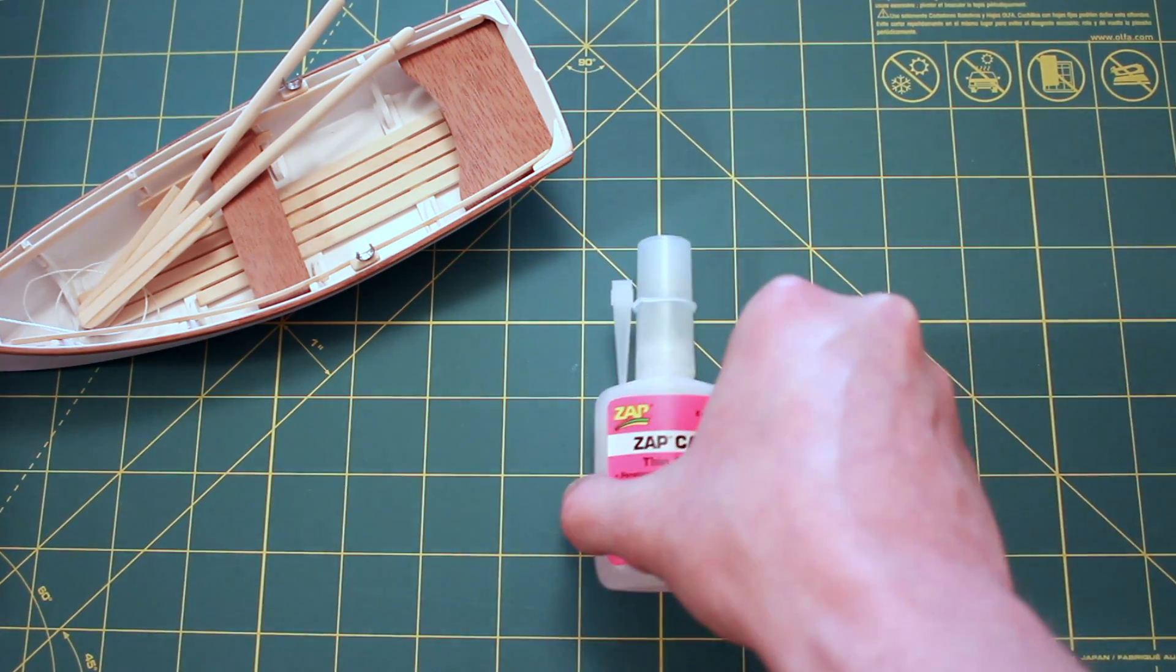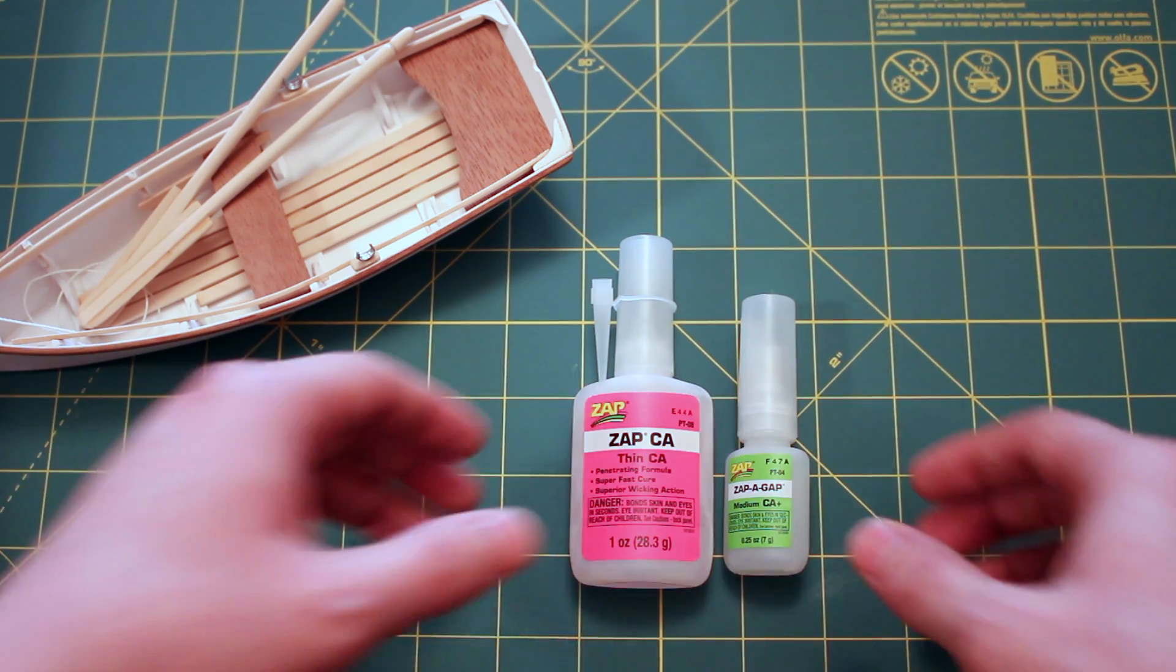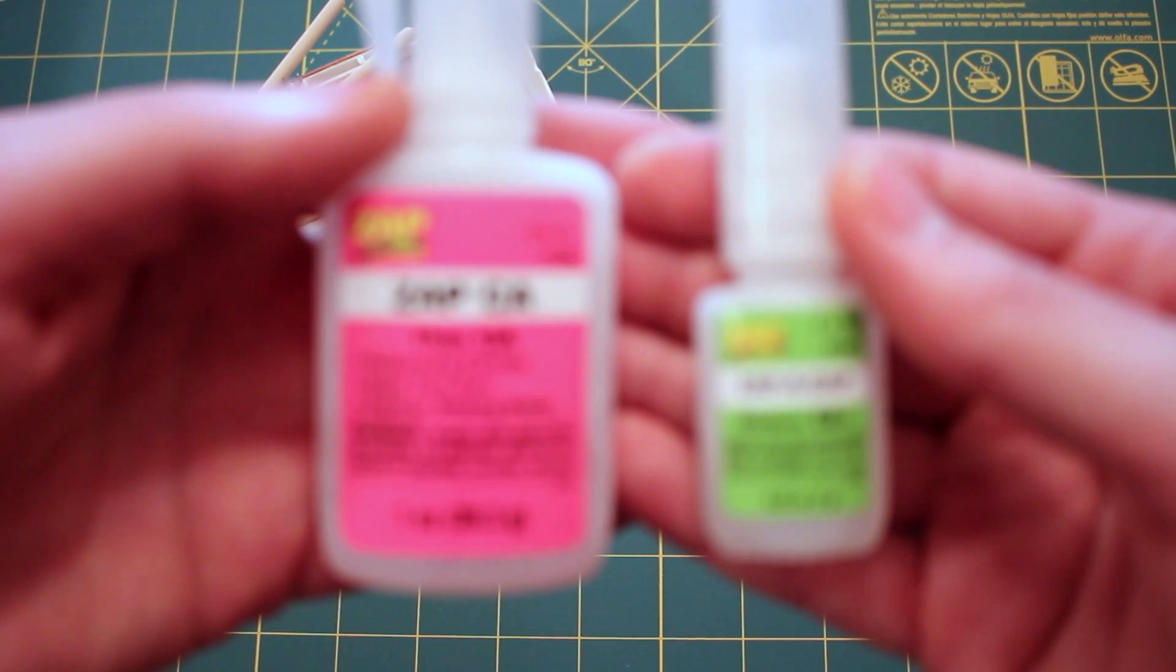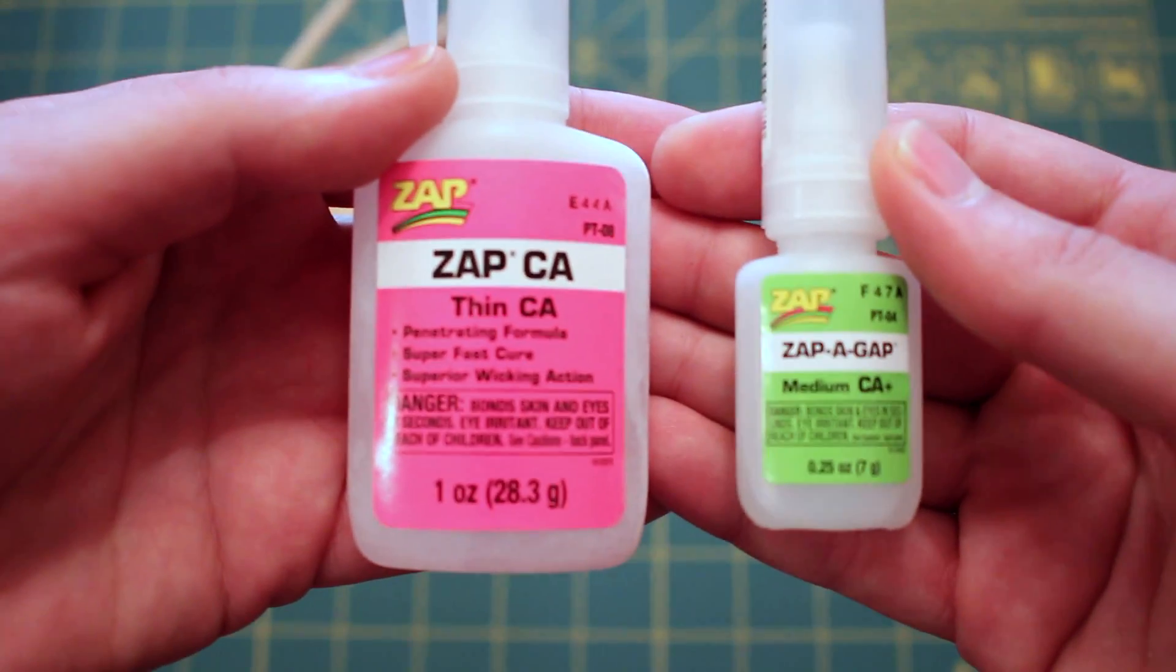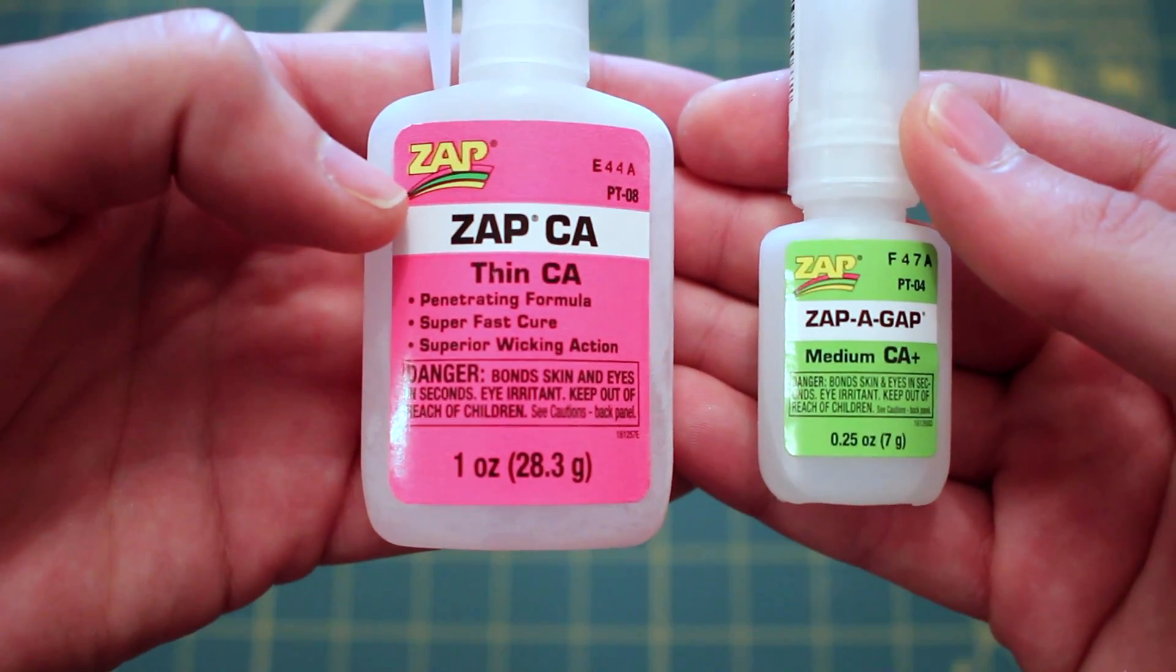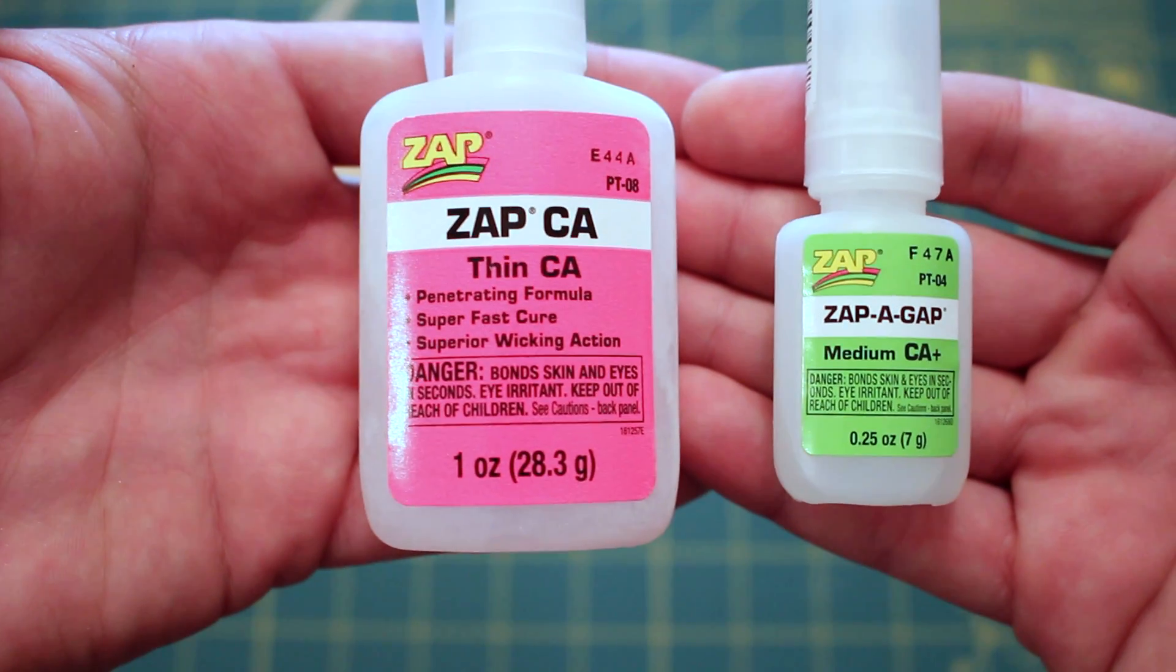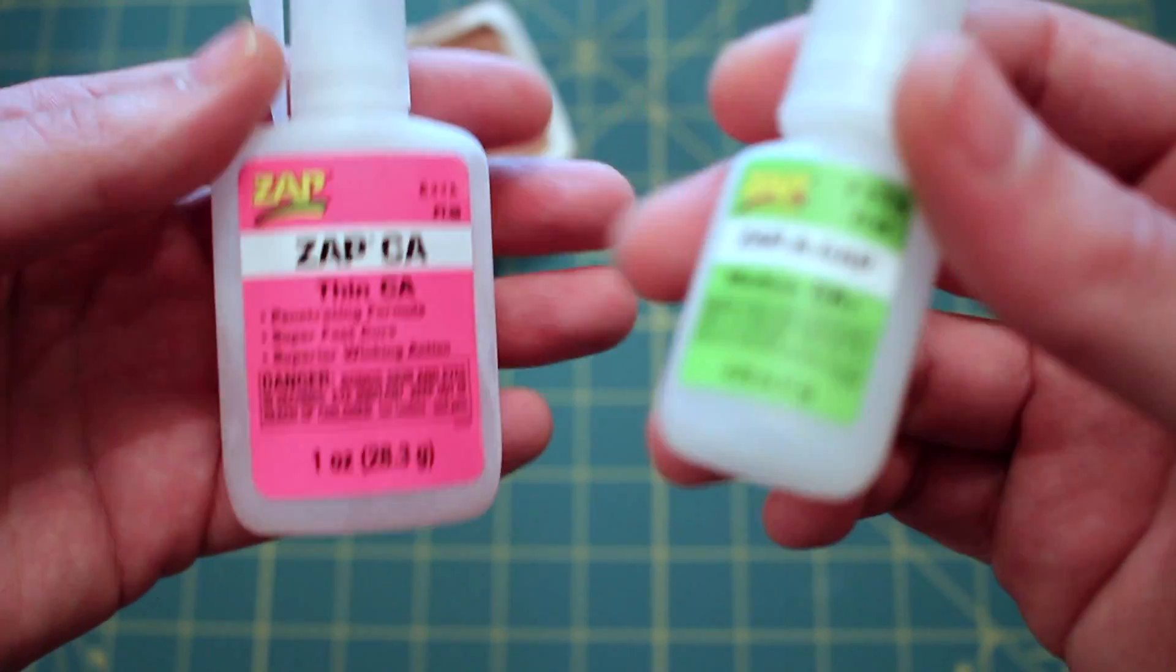One of the things that tripped me up in the beginning was what they asked for was slow CA. I finally found out what the heck they meant, but here's what it looks like in case you guys do decide to ever make a model kit that needs slow CA. There you go. Zappagap. Basically, super glue. So, thin is supposed to dry a little bit faster, medium a little bit slower, and then there's slow, which is the slowest, I believe. But I ended up just using this guy, and everything worked out well.